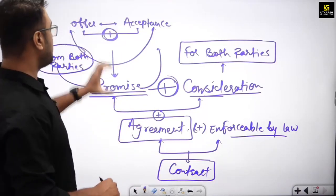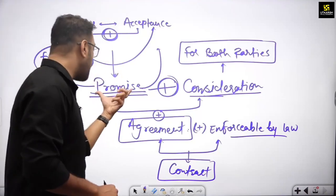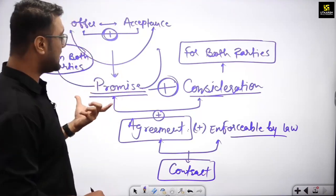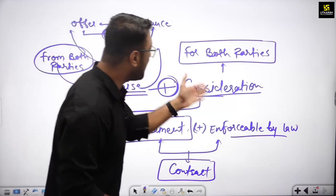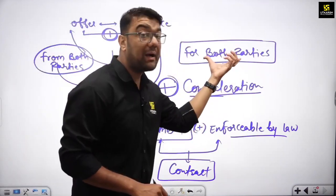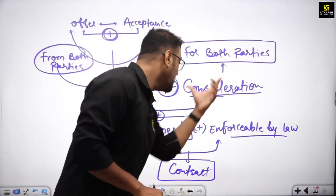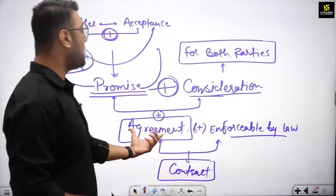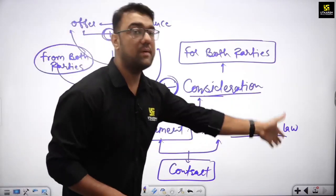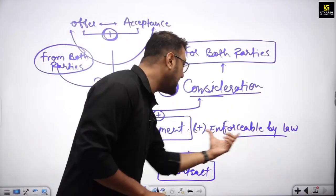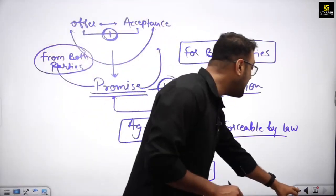Offer happened, acceptance happened — after both are finalized at one place, it becomes a promise. When you add consideration in the promise for both parties — both parties must have it — then it becomes your agreement. An agreement which is enforceable by law — that finalization makes it a contract.